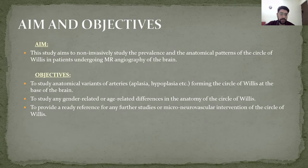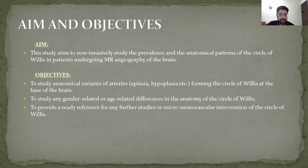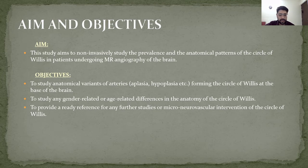Now we come to the objectives of our study. The study aims to non-invasively study the prevalence and anatomical patterns of the circle of villas in patients undergoing MRI angiography of the brain. Objectives include: the anatomical variation of arteries forming the circle of villas at the base of brain; studying any gender-related or age-related differences in the anatomy of the circle of villas; and to provide a ready reference for any further studies on microneurovascular interventions of the circle of villas.